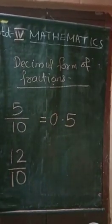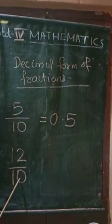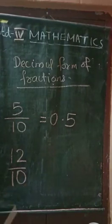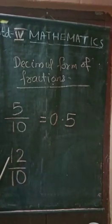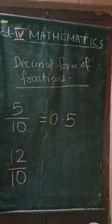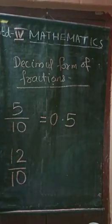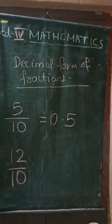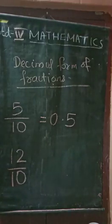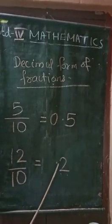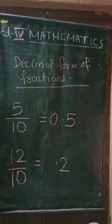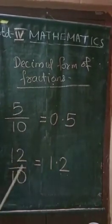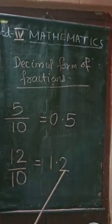Next, 12 by 10. 12 by 10: since 10 is equal to one decimal digit, and the numerator 12 has two digits, once in place, the digits are placed equal to the decimal. Before writing the decimal, write this as the whole number part. So, 12 by 10 is equal to 1.2.